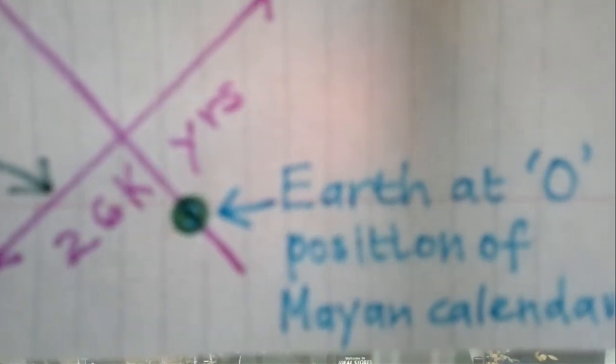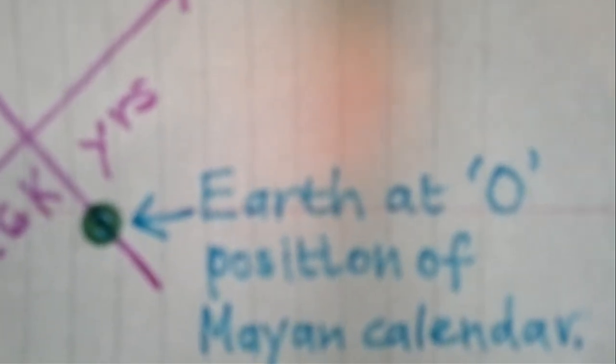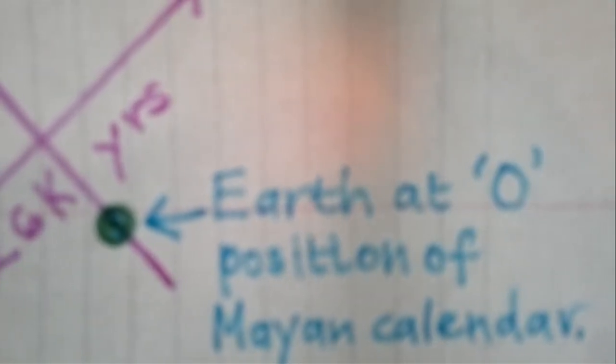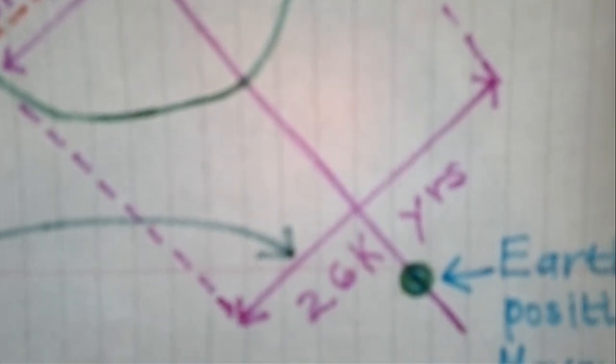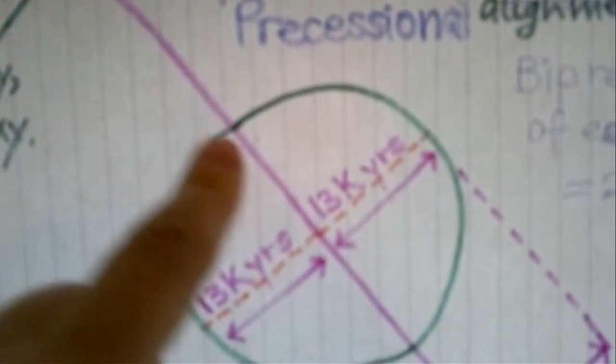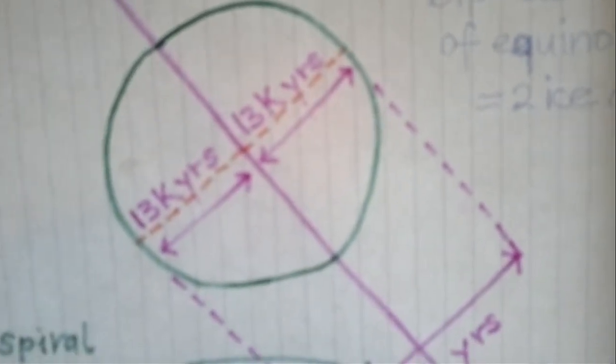Then I read or heard that the Mayan calendar is said to be at zero, position zero next year in November, and that that is when we're supposed to have an alignment of our solar system with the dark rift at the center of our galaxy. The dark rift is an area with no stars.